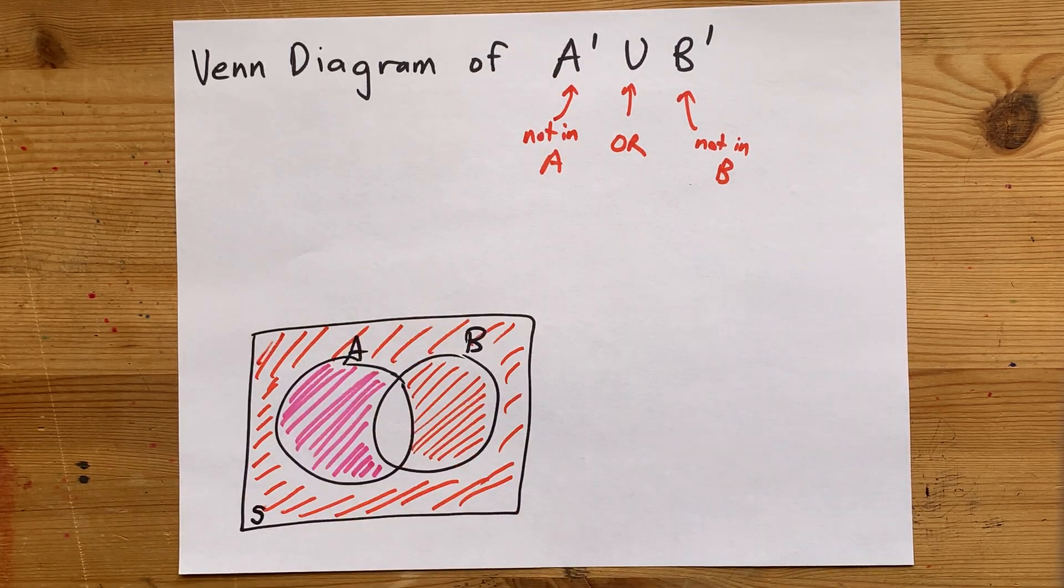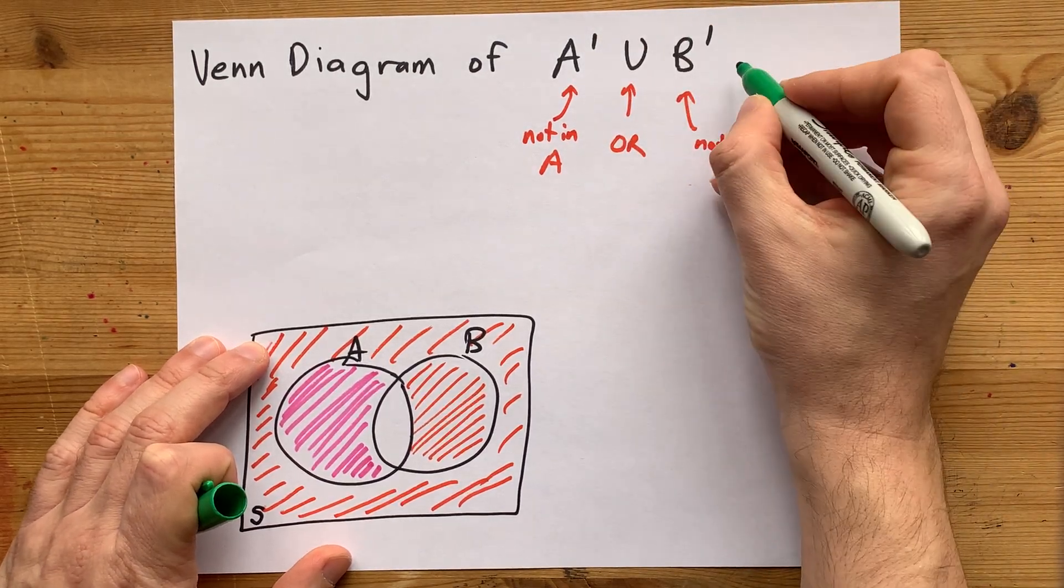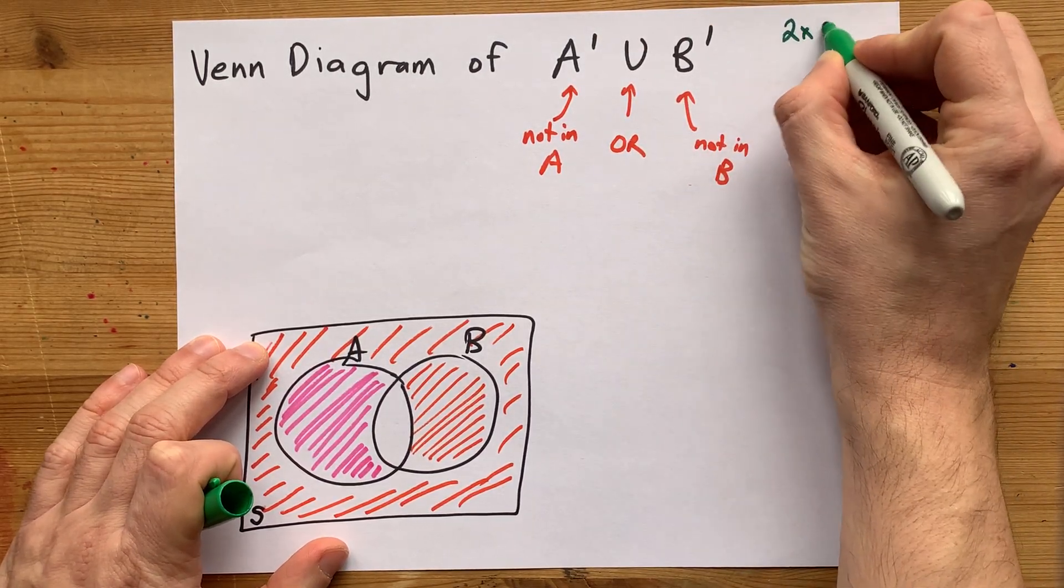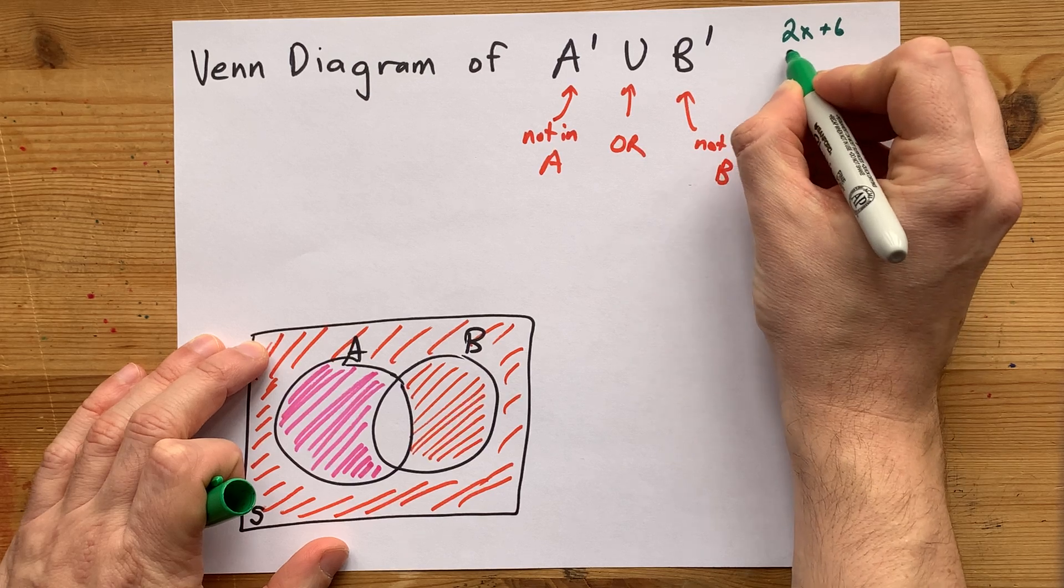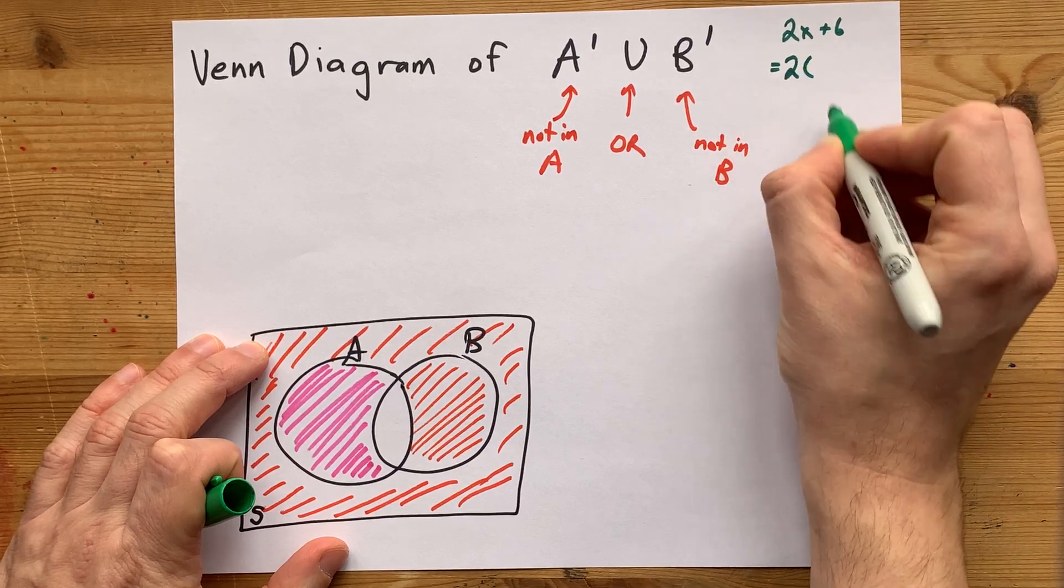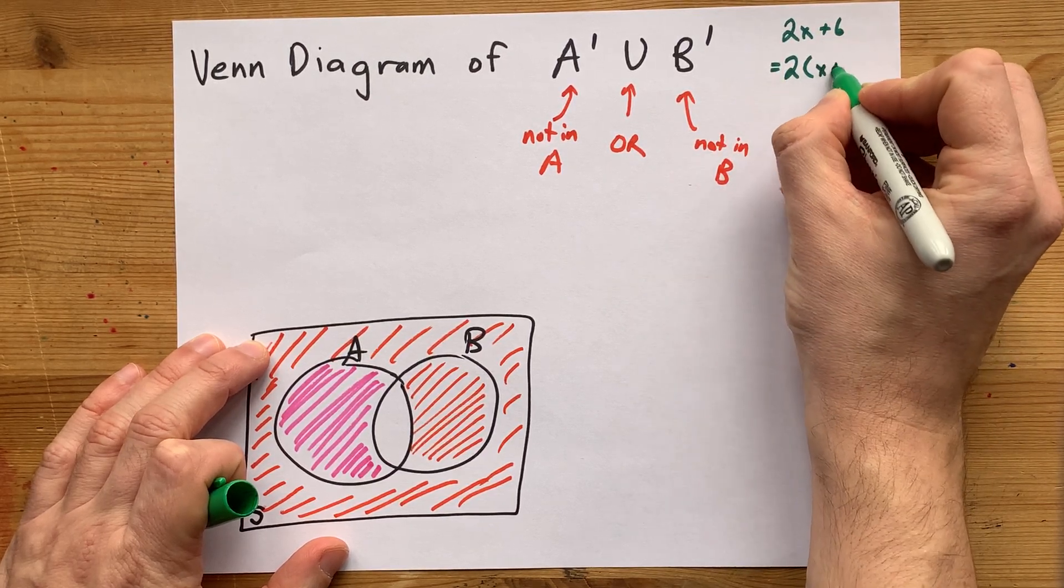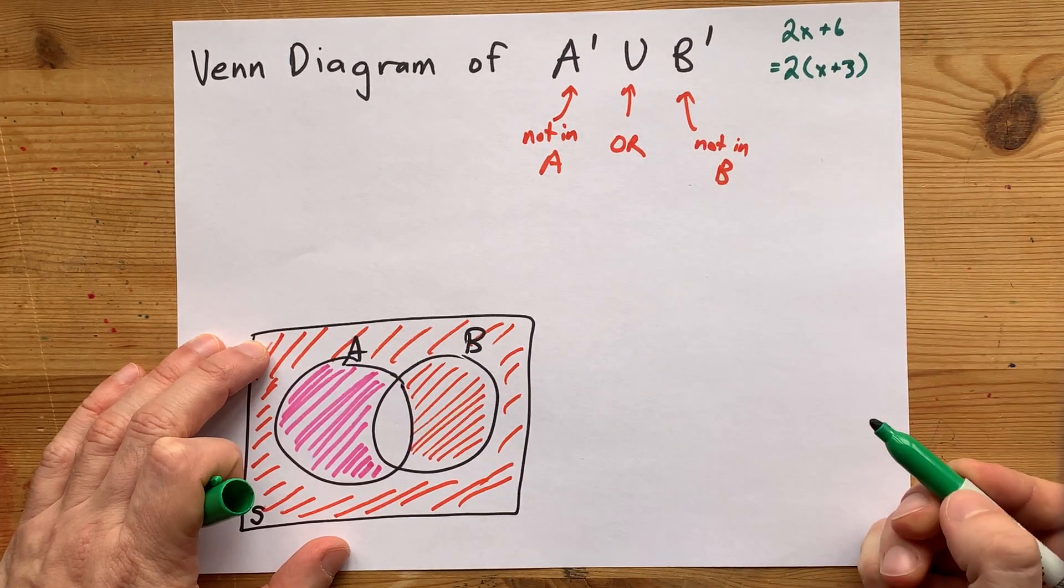I'm going to show you one other quick thing here about factoring out this complement. The same way as if you start with 2x plus 6 and you pull a greatest common factor of 2 out and then divide both of those terms by 2,